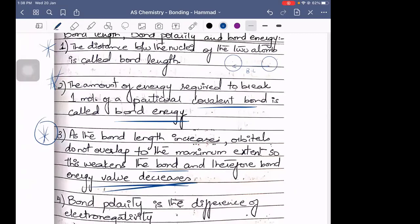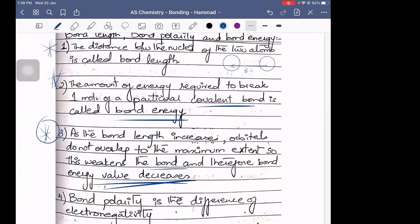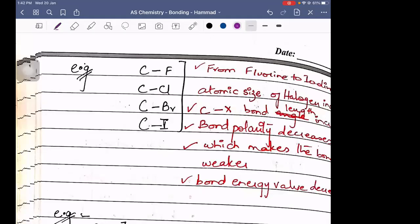Similarly, bond polarity is the difference between their electronegativity. Carbon to fluorine, carbon to chlorine, carbon to bromine, and carbon to iodine.